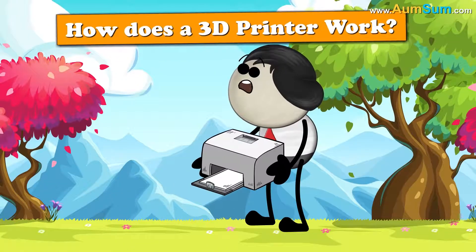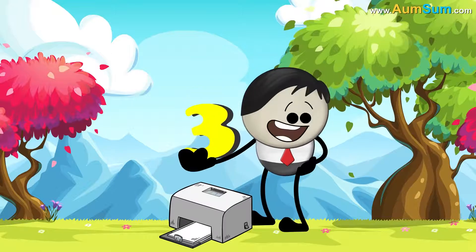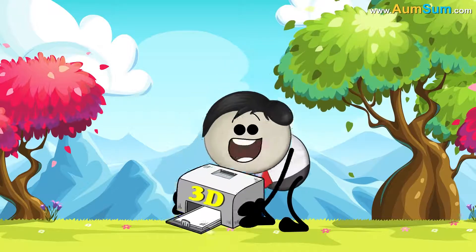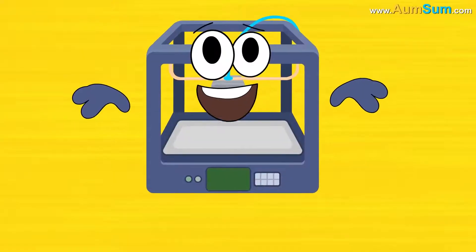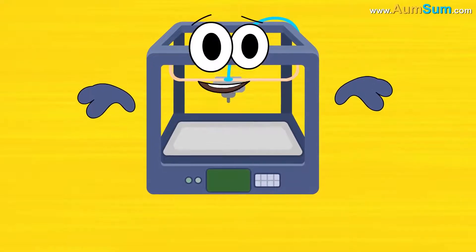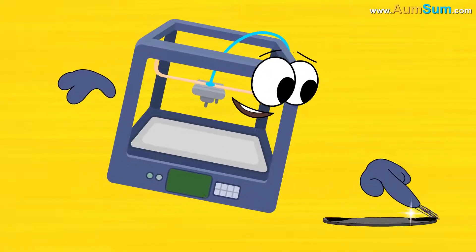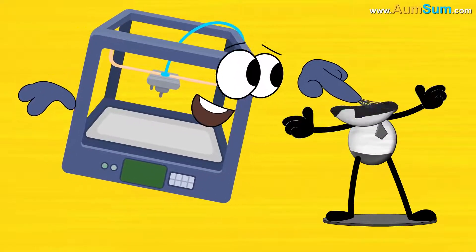How does a 3D printer work? Simple. Mix 3 and D and you get a 3D printer. A 3D printer uses a method called fused deposition modeling. In this method, a 3D model is printed from the bottom up, one layer at a time by repeatedly printing over the same area.